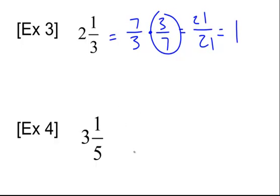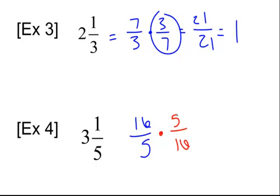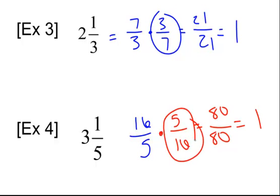Try number four. I have three and one-fifth, so I have to turn that into an improper fraction. I do three times five, which is fifteen, plus one, which is sixteen over five. That's just the improper fraction — it's not the reciprocal yet. We still have to flip it, so I get five-sixteenths. Sixteen times five is eighty, five times sixteen is eighty, and then I get one. So the reciprocal of three and one-fifth is five-sixteenths.